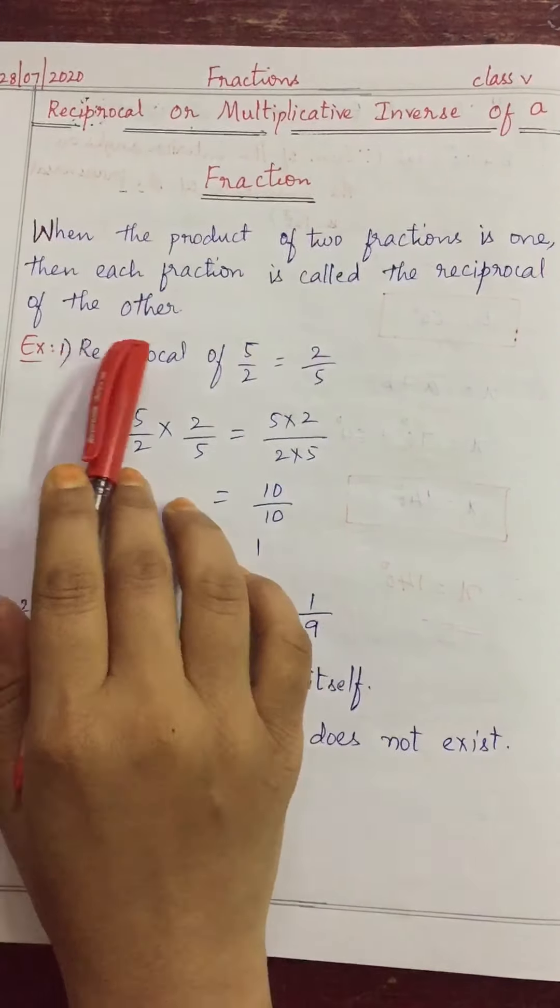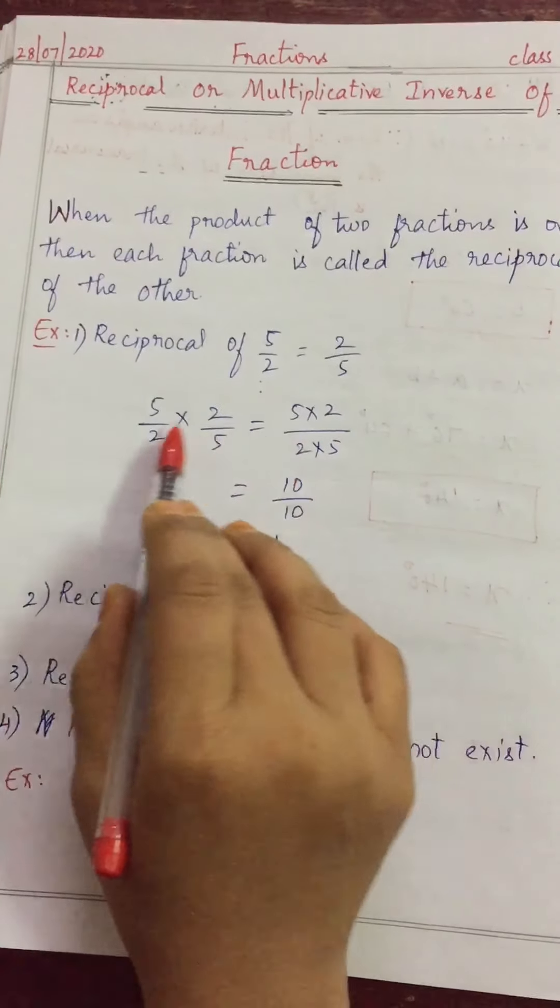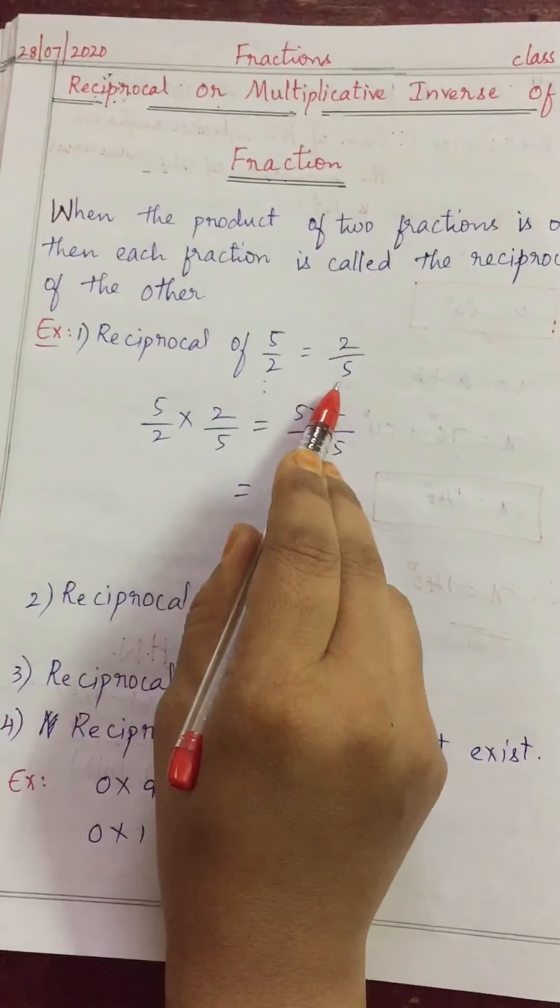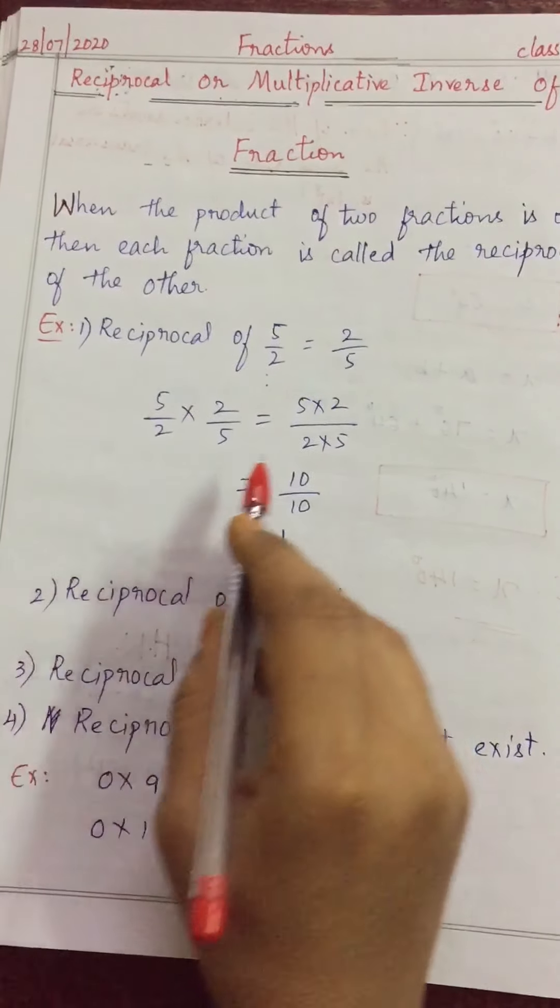That means, suppose one fraction is there 5 by 2, the reciprocal is 2 by 5. How? Here I have shown. See, 5 by 2 into 2 by 5. These two are reciprocal to each other, I said. So, I am multiplying. How?